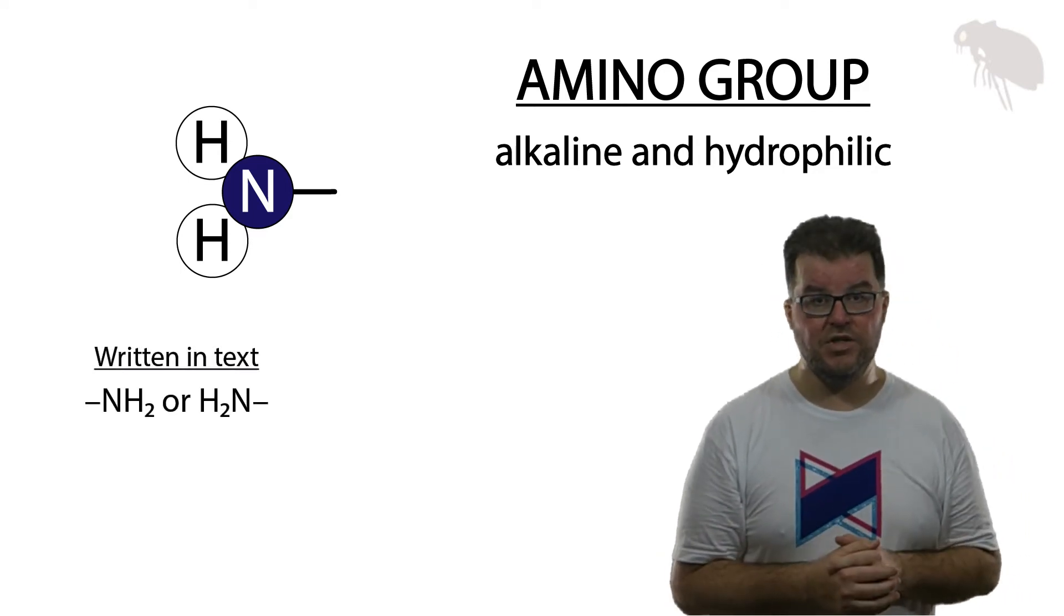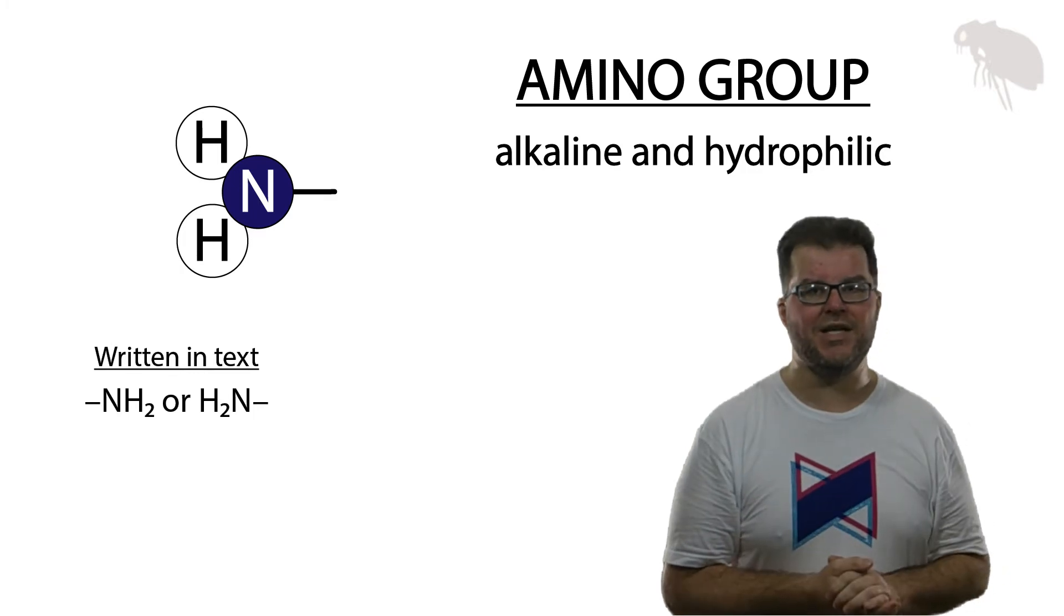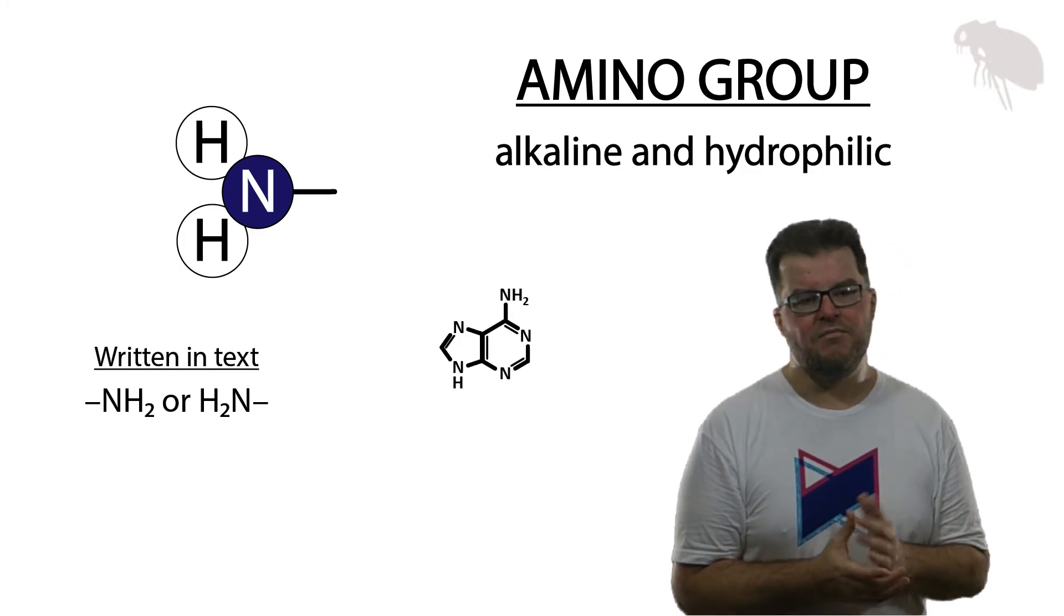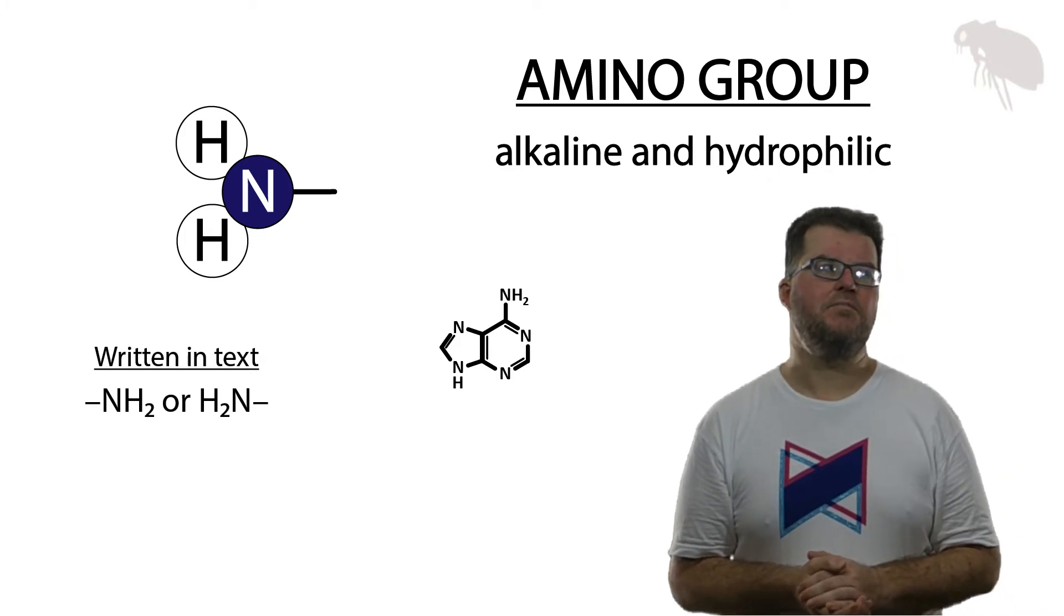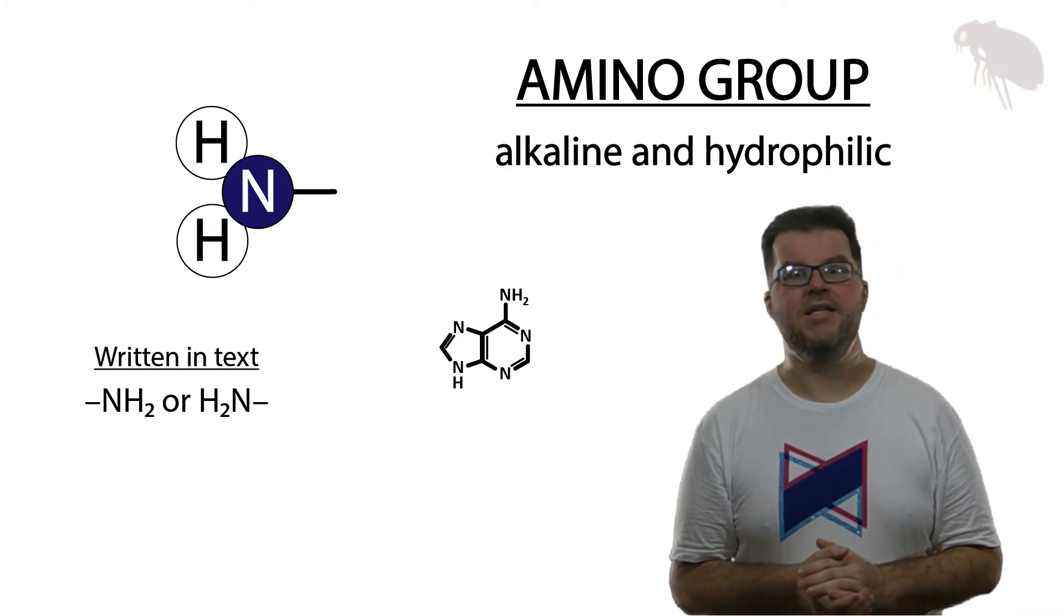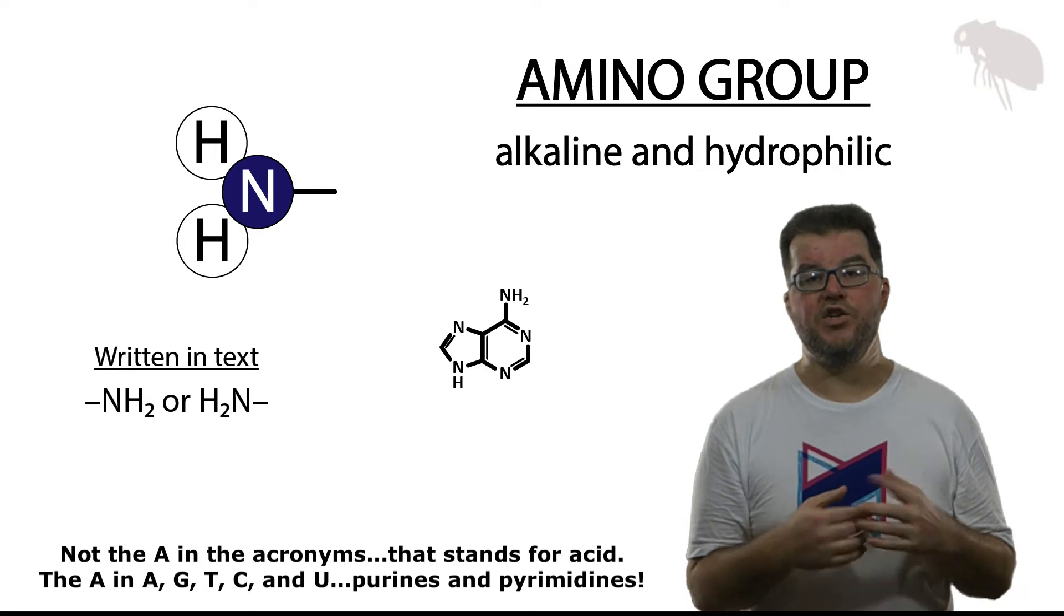This is a pretty easy symbol. It's NH2, just like the name would suggest, or the picture rather would suggest. And here's an example: this is adenine. Adenine is the A in ATP. It is the A in DNA and RNA, and as you can see up top, there's an amino group right there, there's an NH2.